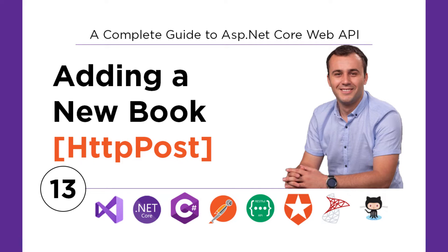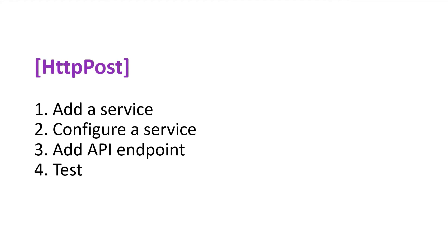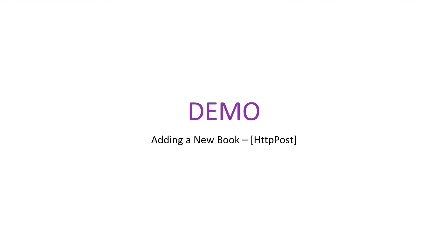Now that you have set up the books controller, it is time to start adding the API endpoints. You'll start with the HTTP POST API endpoint that you'll use for adding books to your database. To do that, you'll first add a service, then configure this service in the startup.cs file, then add the API endpoint, and finally test the HTTP POST. Let us go to Visual Studio and write some code.